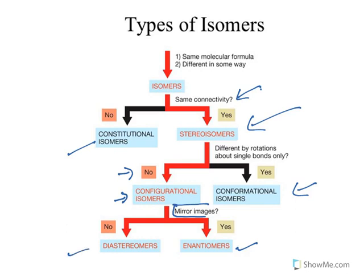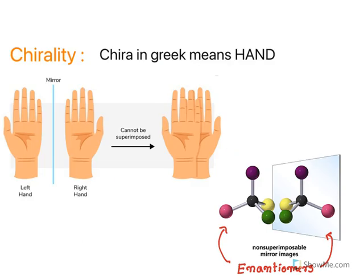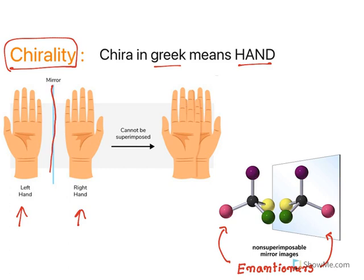Now let us see the concept of chirality. Chira in Greek means hand. Our left hand and right hand are mirror images of each other — you put a mirror between them and the left hand appears as the right hand. But they cannot be superimposed; if you put one hand on another, the thumb is on opposite sides. They cannot be superimposed. This is called non-superimposability. In nature we have compounds like this.